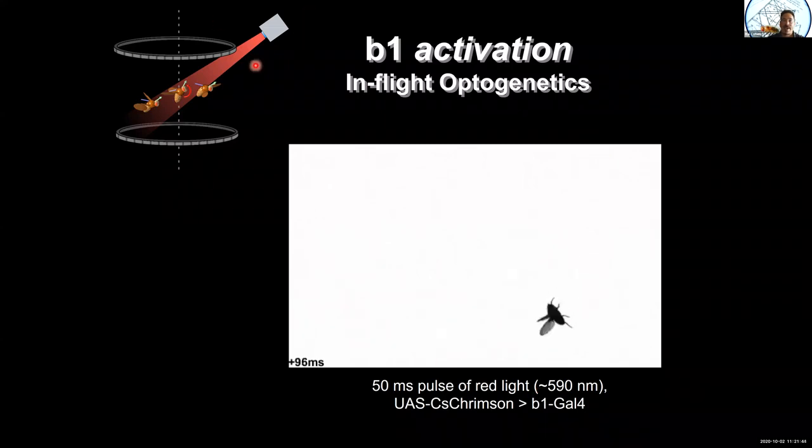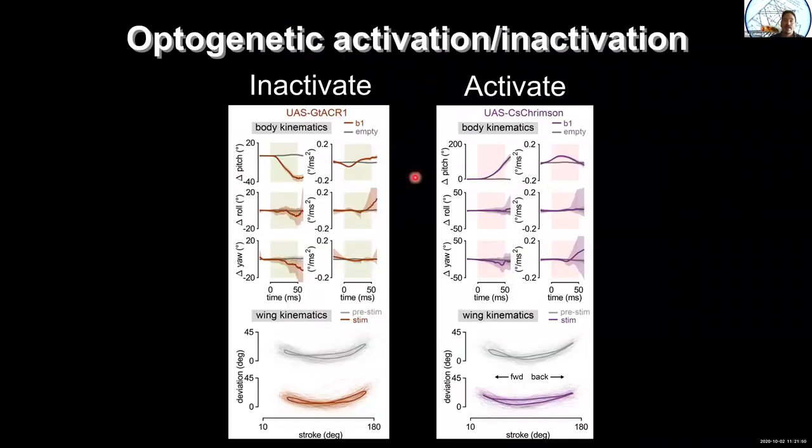So again, the idea is that you're activating something that's giving you a pitch of the fly. You can quantify this data. So not just two movies, but do it for many, many flies. And what you see is that when we inactivate the muscle, what you get is a reduction in the pitch. Not much happens to roll. Not much happens to the yaw. If you activate it, the pitch goes up. And again, not much happens to roll or yaw. And like we expect, when you activate the wing stroke, it shrinks a little bit. When you deactivate, it shrinks a little bit. When you activate, it increases a little bit, as we expect.